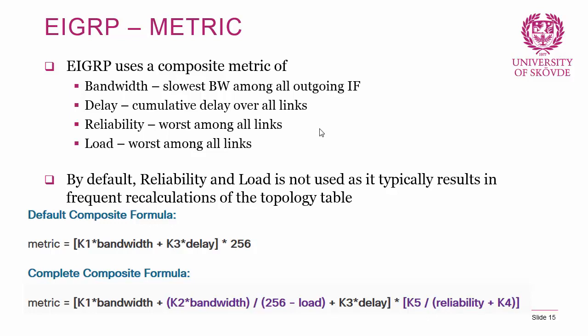The full composite formula is: [K1 × bandwidth + (K2 × bandwidth) / (256 − load) + K3 × delay] × 256. The multiplication by 256 accounts for the default reliability value and is needed to produce the required 32-bit metric. By default K1=1 and K3=1, so only bandwidth and delay contribute to the metric.